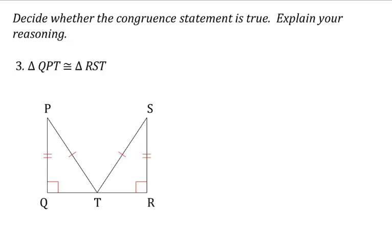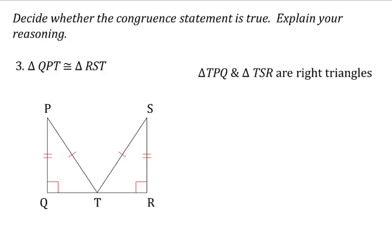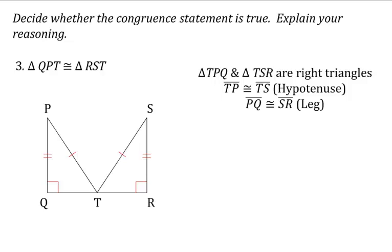Last problem: decide whether the congruence statement is true and explain your reasoning. We have two sides and an angle. Now, I know you've been thinking about three-letter words spelled with A and S this whole time — don't write bad words on your test in any direction! On this one it's actually hypotenuse-leg, because both triangles are right triangles. TP and TS are our hypotenuses, and PQ and SR are our legs. So we can say this is true by hypotenuse-leg.